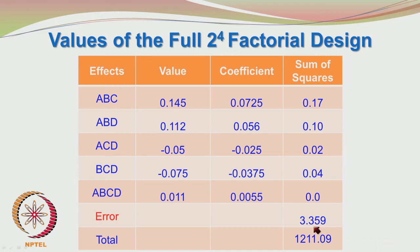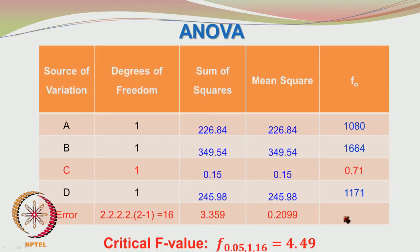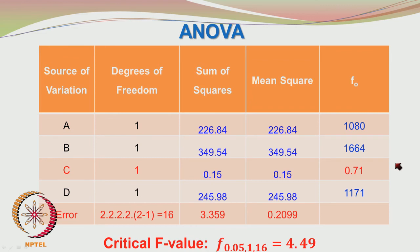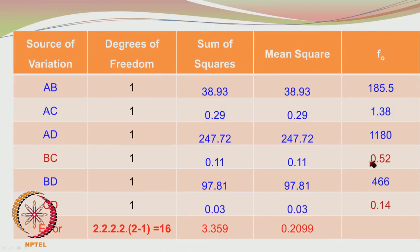You also have the error sum of squares which is 3.359. When you do the ANOVA we get source of variation, degrees of freedom, sum of squares, mean squares, and the F value. As before, we find the critical F value corresponding to 0.05 level of significance with 1 degree of freedom in the numerator and 16 degrees of freedom in the denominator, giving 4.49. We compare these F values with 4.49 to see which are in the acceptance region and which are in the rejection region. Factor C is lying in the rejection region — this is old news — and now we see BC and CD are also in the rejection region.